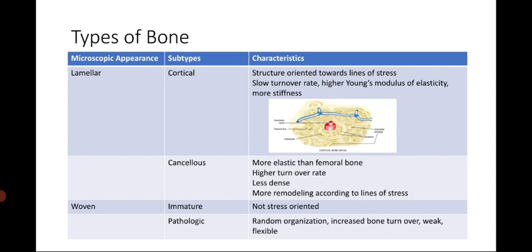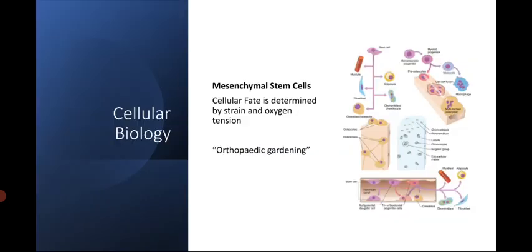After discussing the types of bone, we'll next discuss cellular biology, which includes mesenchymal stem cells, osteoblasts, osteoclasts, osteocytes, and the interactions they have with each other. Mesenchymal stem cells become osteoblasts under conditions of low strain and increased oxygen tension.